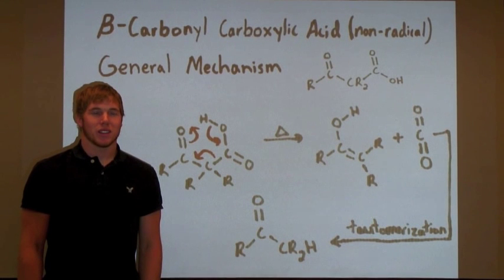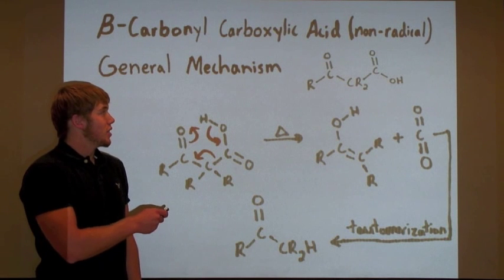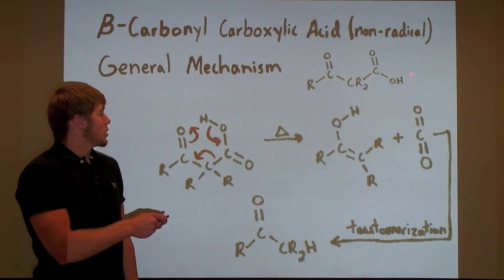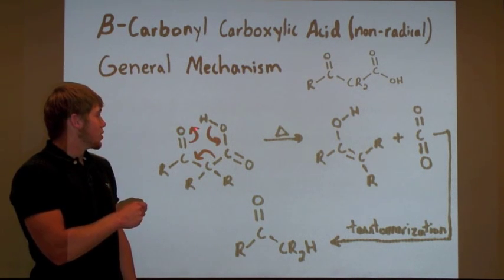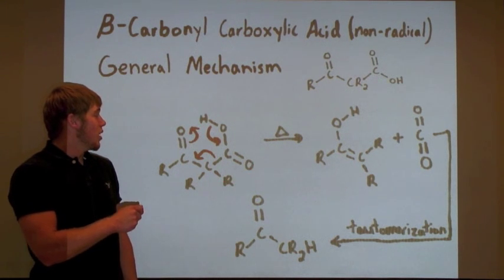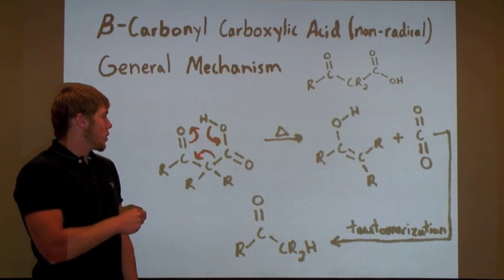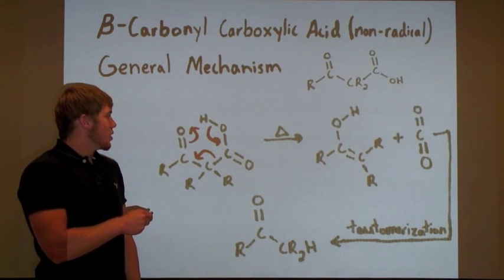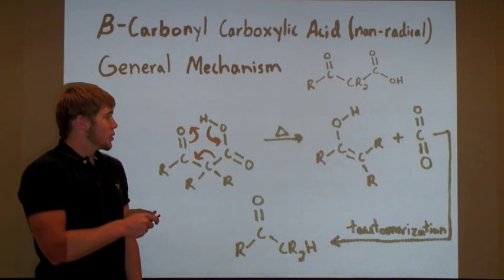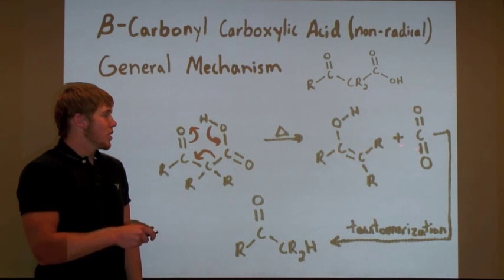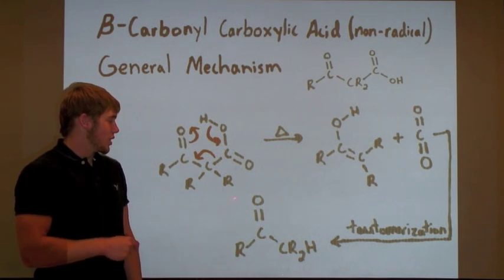Let's look at the mechanism for the decarboxylation of beta-carbonyl carboxylic acids. In the mechanism, the beta-carbonyl carboxylic acid must exist in a conformation where the beta-carbonyl is hydrogen bonded to the hydrogen of the carboxylic acid. In this conformation, there is a cyclic rearrangement of the bonding electrons which results in the dissociation of the beta-carbonyl carboxylic acid to yield an enol and carbon dioxide. The enol then spontaneously tautomerizes to form the ultimate product, a ketone.